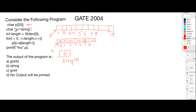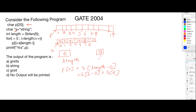Then there is a for loop. In the for loop we have i, and initially the value of i is 0. For the first time, p[0] is equal to s[length - i], that means s[6 - 0] which is s[6]. Whatever is stored at index location 6 is going to be stored at p[0]. Therefore, the null character will be stored at p[0].